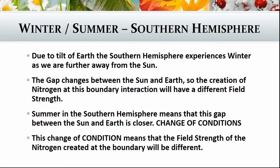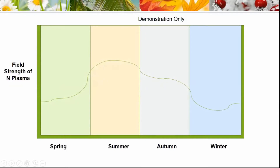Every time this position between the sun and the earth changes, we change the conditions, and so the field strength of the nitrogen which is originally created will be different at this boundary all the time. What I've done here — just for demonstration purposes — is for people who are very visual: on the horizontal axis I've got the four seasons — spring, summer, autumn, and winter — and the vertical axis is the field strength of the nitrogen plasma. What I've tried to illustrate with the squiggly lines is that in summertime we would probably have a certain field strength of the nitrogen, and in winter we would have a different field strength. So throughout the year this field strength of the nitrogen plasma is going to be different.